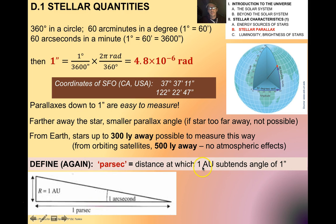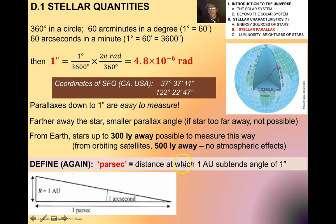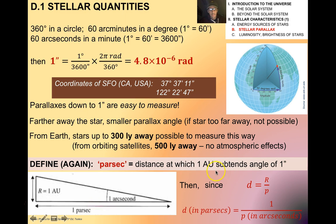A parsec is a distance at which one astronomical unit subtends an angle of one arc second. Since D is R over P, we have that D in parsecs is equal to one over P in arc seconds, and that's given to you in your data booklet.